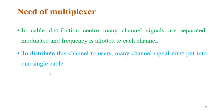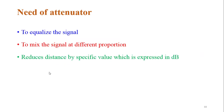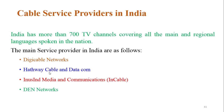Multiplexers: In the cable distribution center, many channel signals are separated and frequencies are allotted to each channel. To distribute these channels to users, many channel signals must be combined into one cable — that is why multiplexing is used. Attenuators are used to equalize signals at different proportions, reducing signal power by a specific value expressed in dB. In India, more than 700 channels are telecast in main and regional languages. Major service providers include Digi Cable Networks, Hathway Cable and Datacom, Incable Media and Communications, and IN Cable Network.